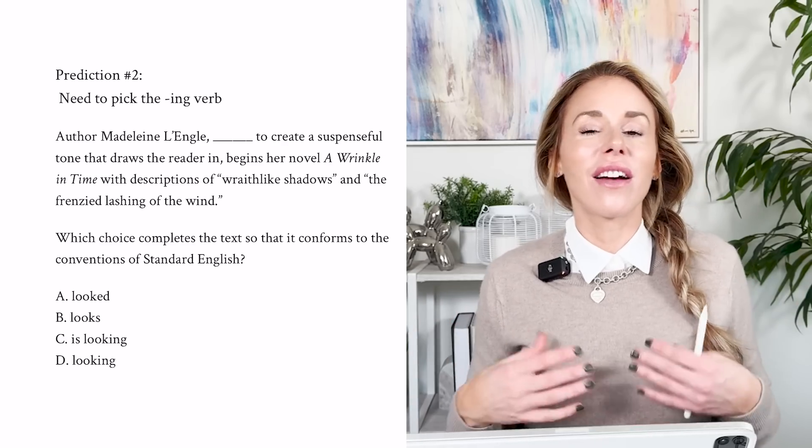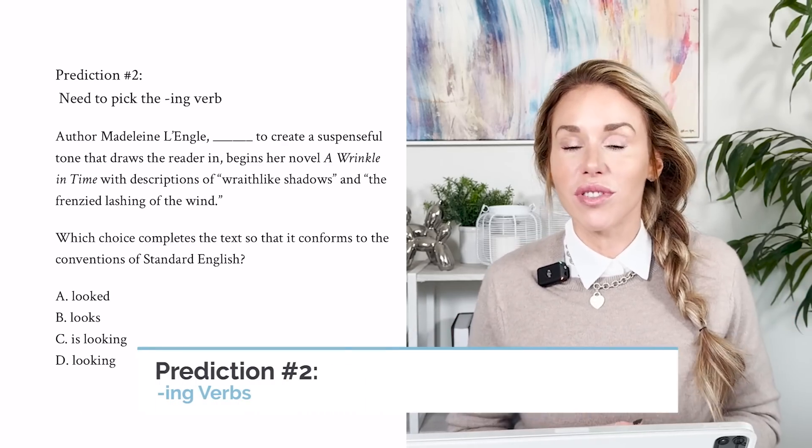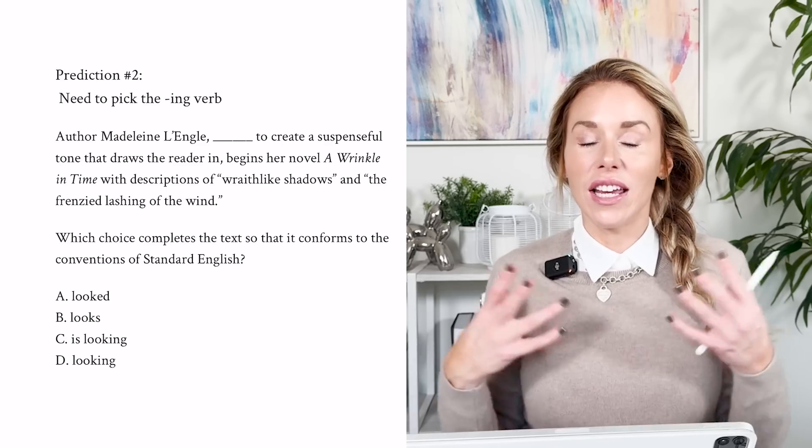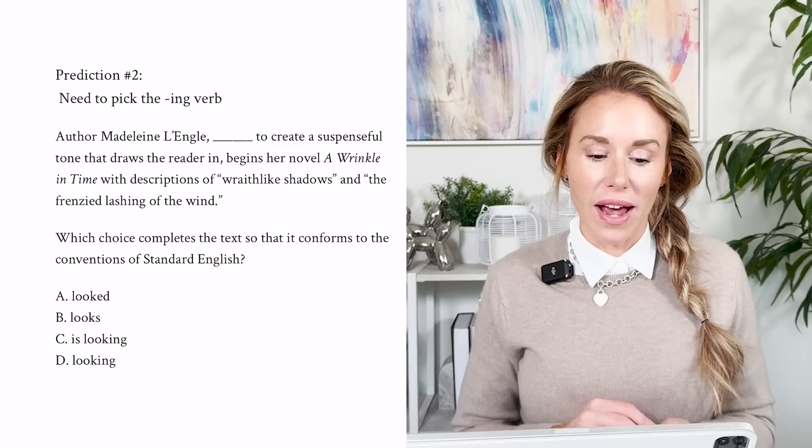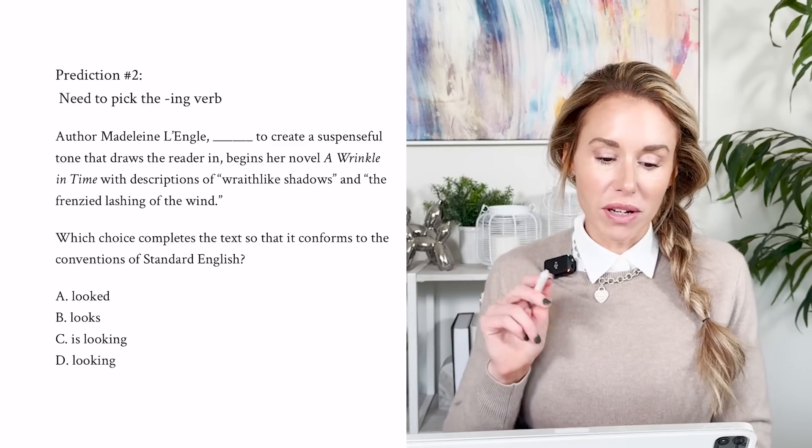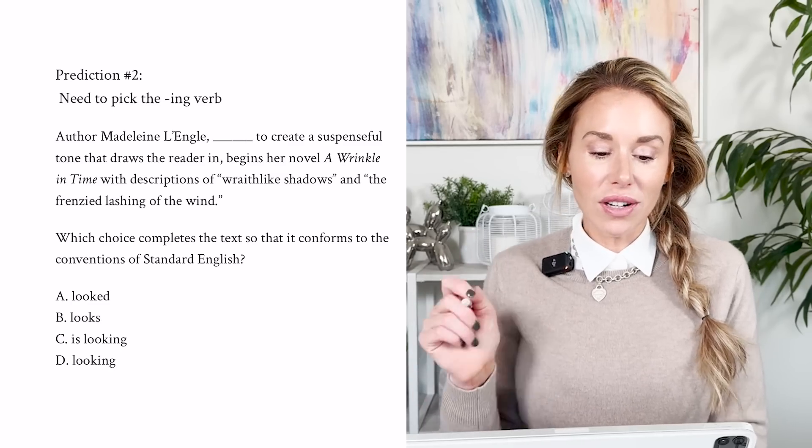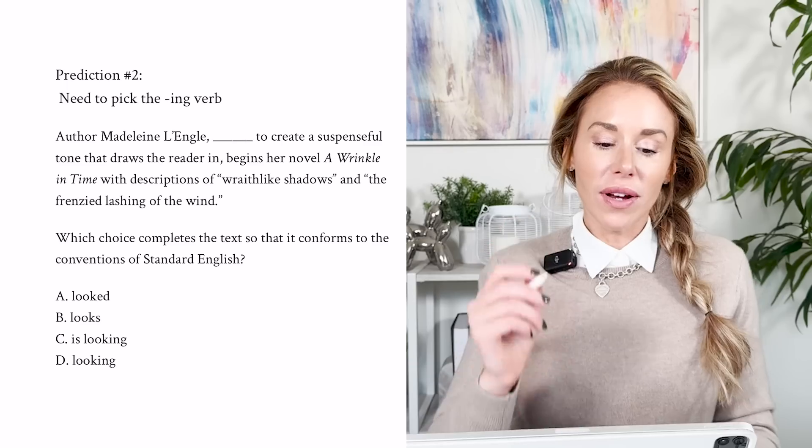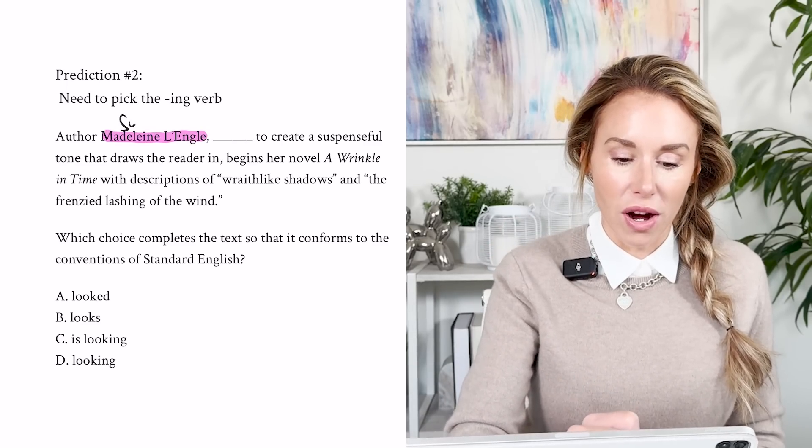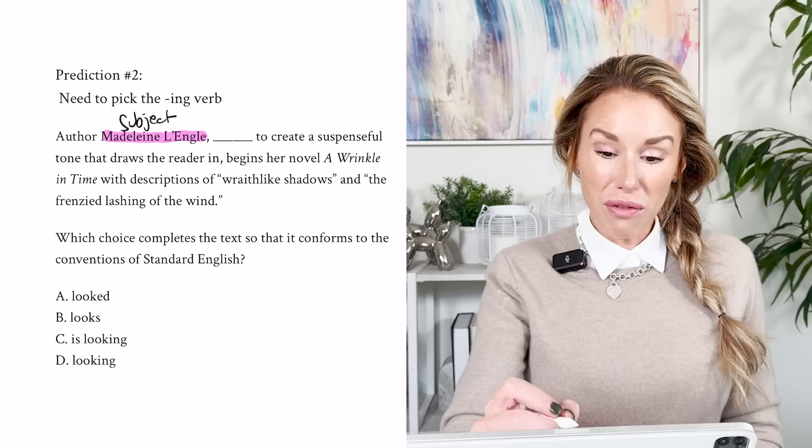All right, my second prediction that I've noticed is trending is ing verbs. So you might need to pick a verb that ends in ing, and here's a case for when you would do that. It says author Madeline L'Engle, blank to create a suspenseful tone that draws the reader in, begins her novel A Wrinkle in Time. Now here's the thing. We have a subject here. It's about this author.